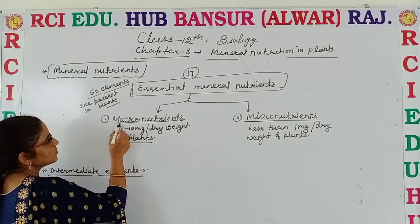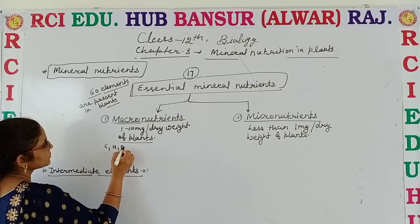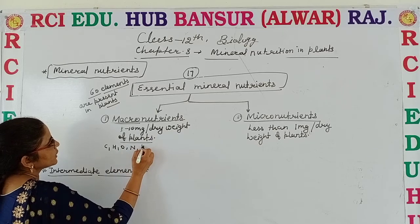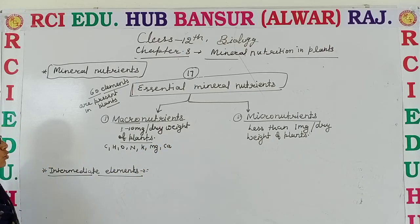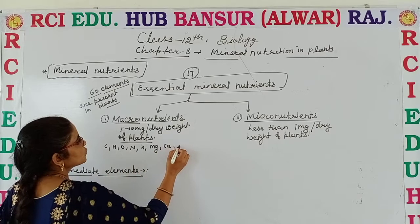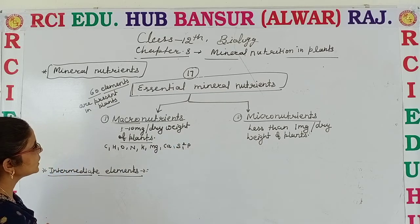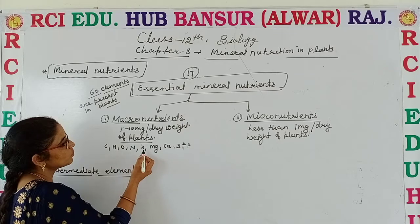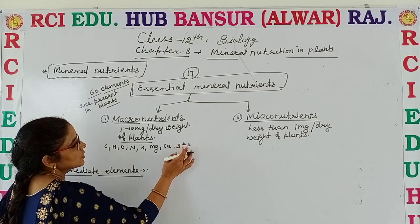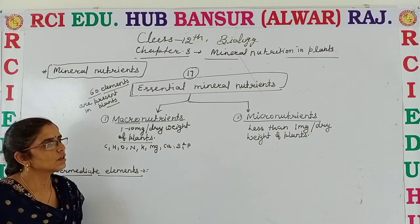Macronutrients, as the name suggests, are required in large amount. These are: carbon, hydrogen, oxygen, nitrogen, potassium, magnesium, calcium, sulfur, and phosphorus. These are the macronutrients which are present in large amounts in the plants.